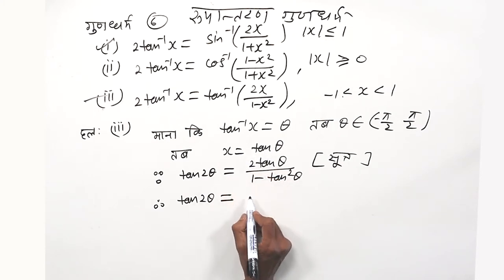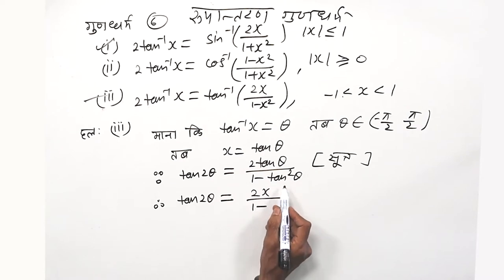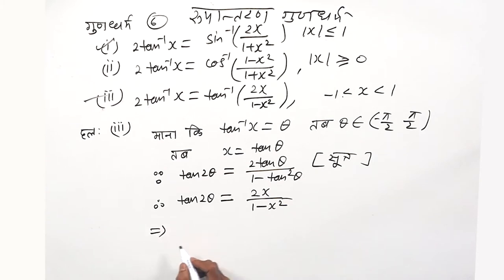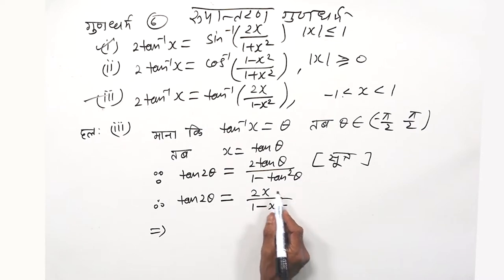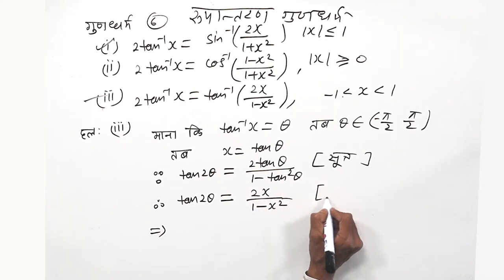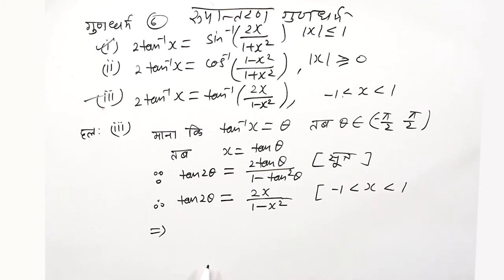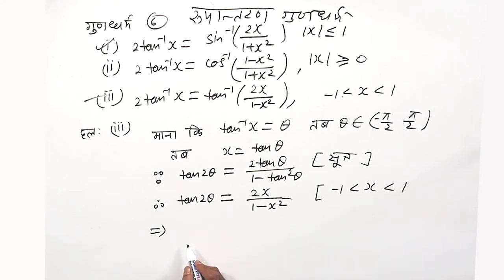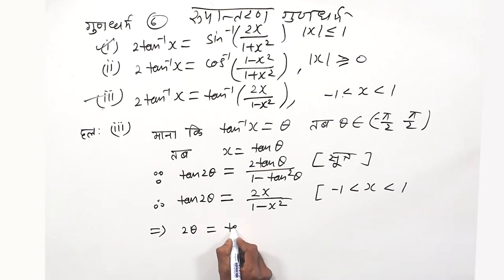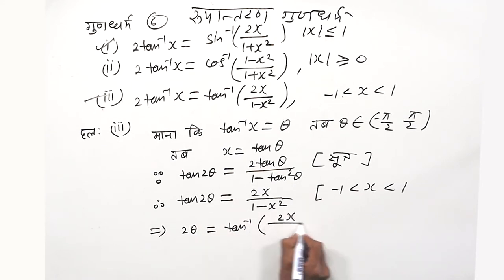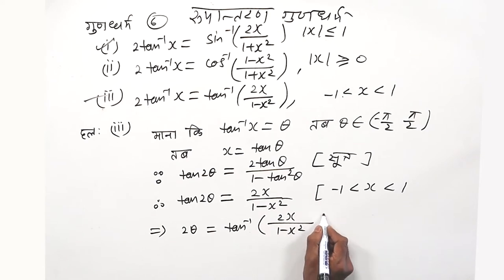Let tan θ = x, so 2x upon 1 minus tan² θ becomes 2x upon 1 minus x square, where x is less than 1. Therefore 2θ is equal to tan⁻¹ of 2x upon 1 minus x square.